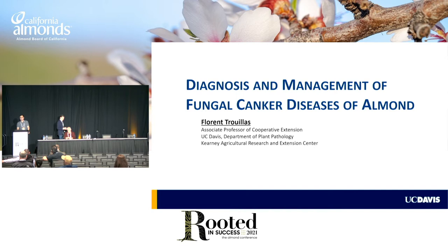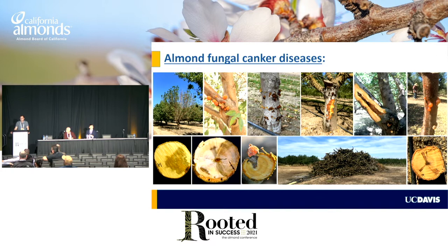Thank you, Drew, and thank you everyone for being here today. I'm from the Kearney Ag Center and I work also with UC Davis. I've been working for several years now investigating canker disease. I'll provide an overview of some things like Phytophthora and band canker, where Thames and Greg respectively will go into more detail. When we talk about almond canker disease, we're talking about wood discoloration, death of the cambium, death of the bark, healing of the bark, usually a lot of gumming on these trees, V-shaped or wedge-shaped discoloration, and dieback of the trees. Canker disease is certainly one of the leading causes of tree death in the orchard, especially in young orchards.